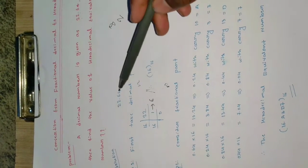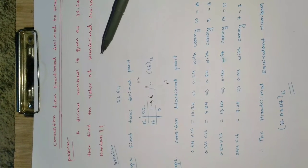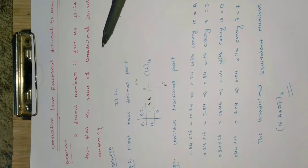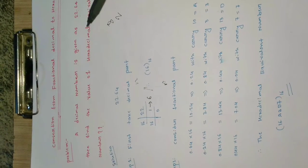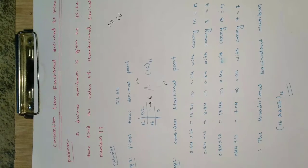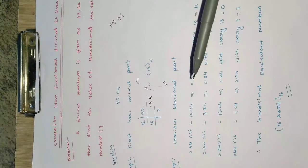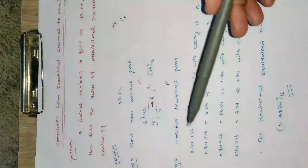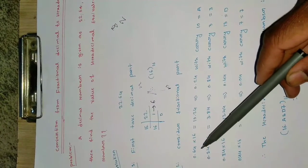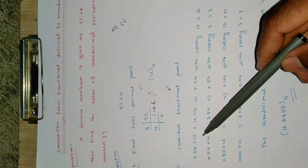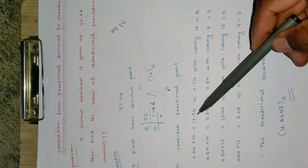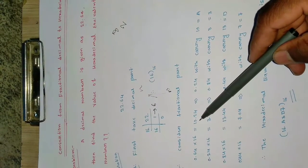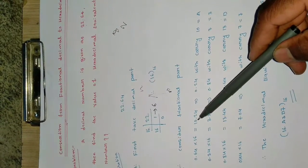Now I need to convert 0.64 to hexadecimal as well to complete the conversion of 22.64. In step two, consider the fractional part 0.64. Multiply 0.64 by 16: the answer is 10.24. Take the integer part, which is 10.